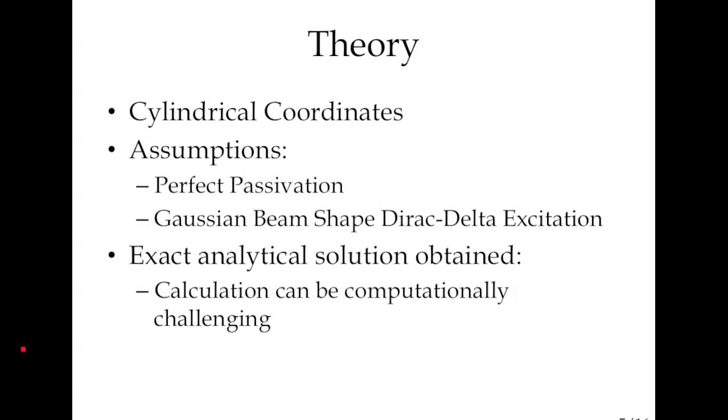So I used cylindrical coordinates. I assumed perfect passivation. The pulse was a Dirac delta pulse in time and a Gaussian in the radial direction. And although I was able to get an exact analytical solution, the computation was a bit of a challenge.